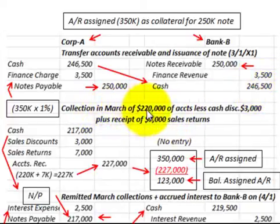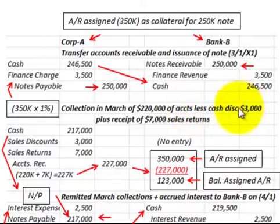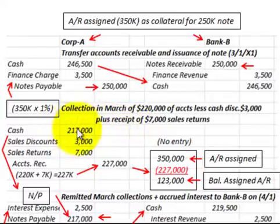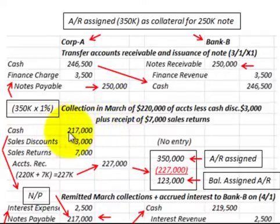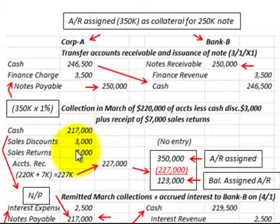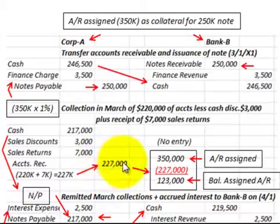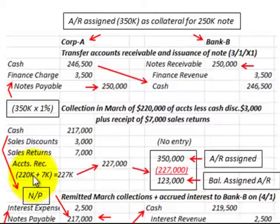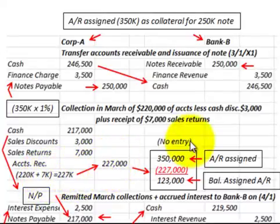For the March collection, Corporation A collects $220,000 on their accounts receivable. There is a cash discount taken by customers of $3,000 and sales returns of $7,000. Bank B has no entry for this collection. Corporation A records cash received of $217,000, sales discounts of $3,000, and sales returns of $7,000, reducing accounts receivable by $227,000 — the $220,000 collections plus $7,000 in returns. The assigned accounts receivable balance drops from $350,000 to $123,000.